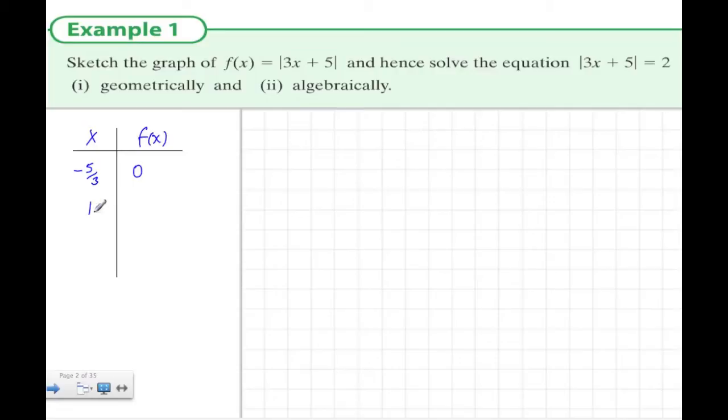Minus 5 over 3, we want maybe two values either side of this. When x equals 1, we have 3 times 1 plus 5 which is 8. A value below minus 5 over 3 would be x equals minus 3. Minus 3 times 3 is minus 9 plus 5 which is minus 4. Because it's absolute value, this becomes plus 4.